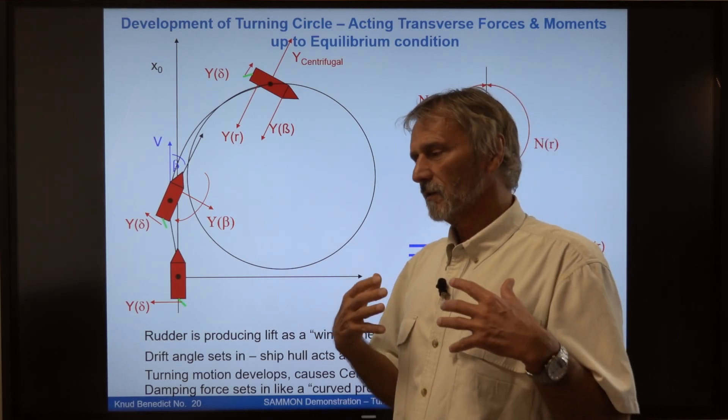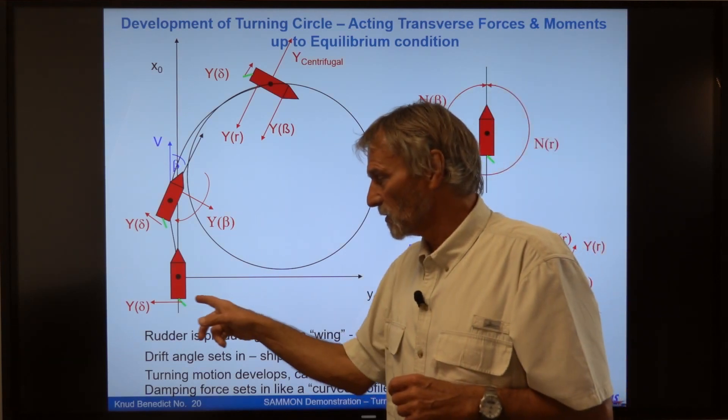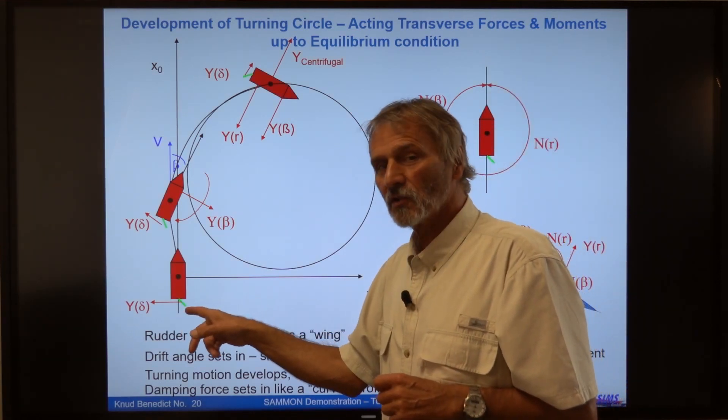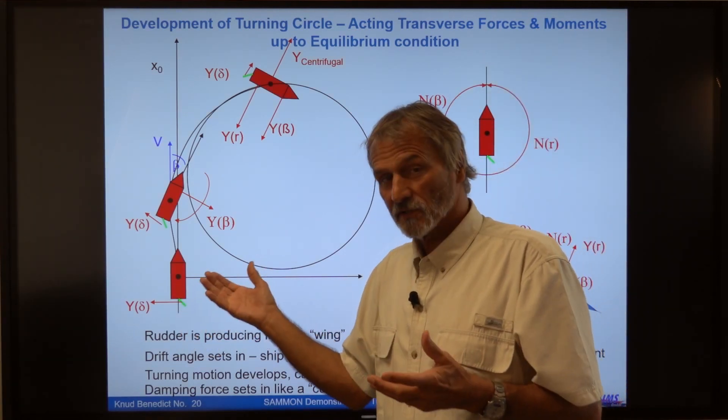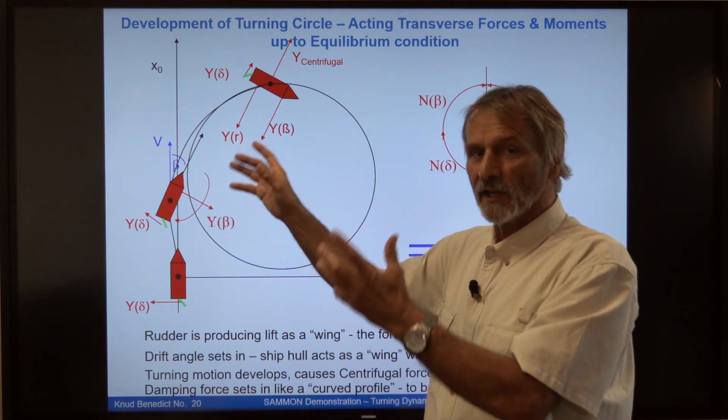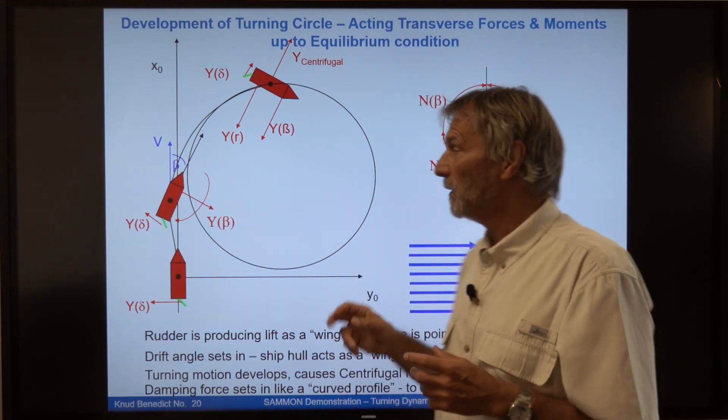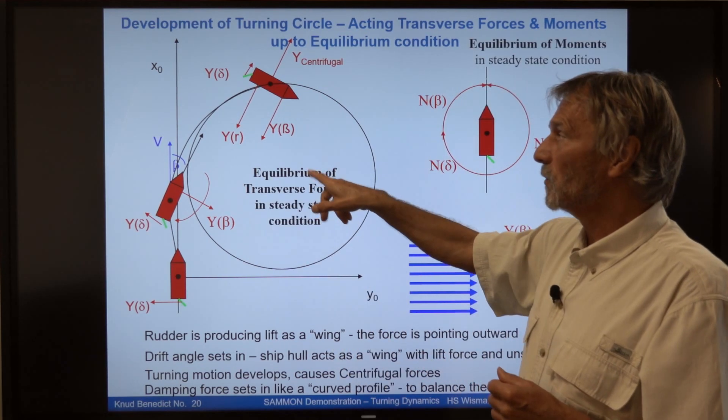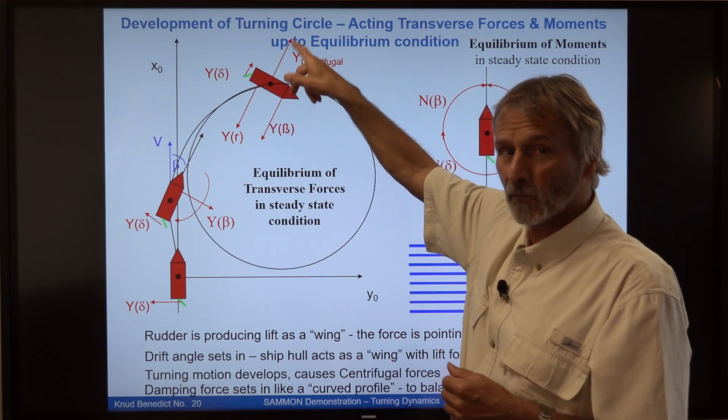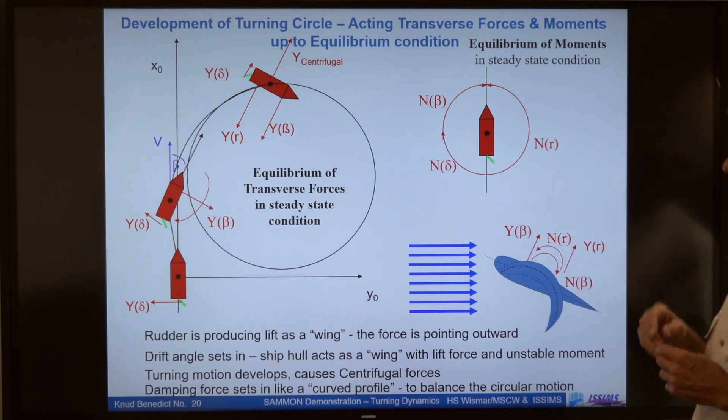So we can see the process of steering the ship is you activate a control force, for instance, the rudder. And then all the forces are generated and finally they form an equilibrium. So there is an equilibrium of the transverse forces, these four forces we have, and also an equilibrium of moments.